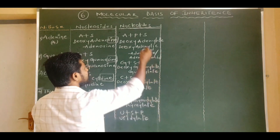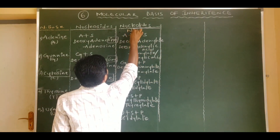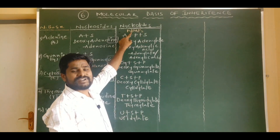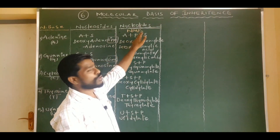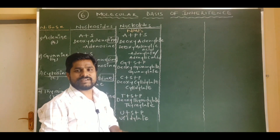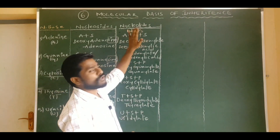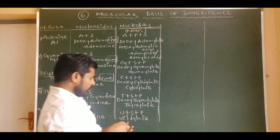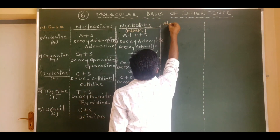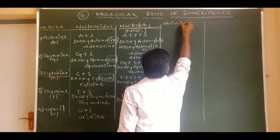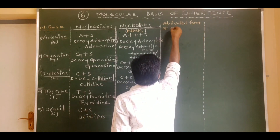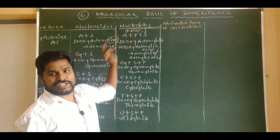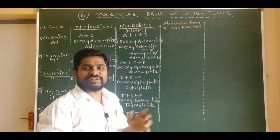Nucleotides are generally simply called NMPs — nucleoside monophosphates. Here N stands for nucleoside and MP means monophosphate. Nucleoside plus a single phosphate group is considered to be a nucleotide. This is the general abbreviated form of a nucleotide. Now we are going to look at the abbreviated forms of different types of nucleotides.